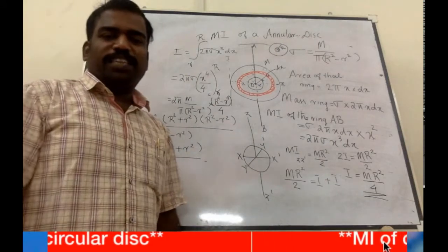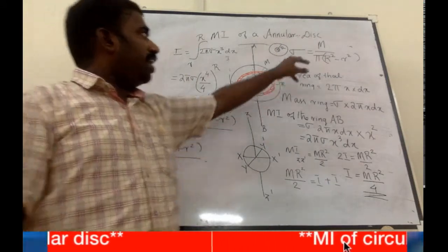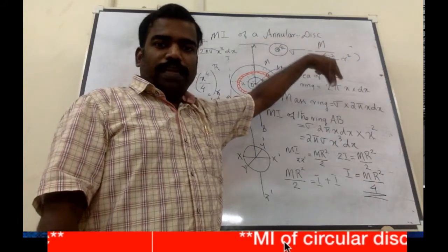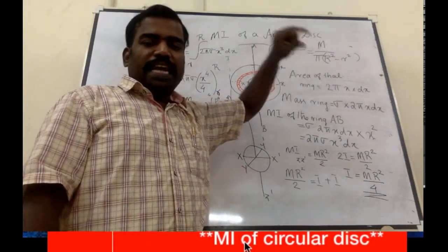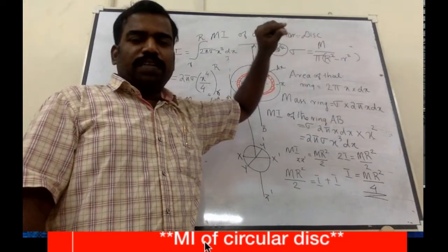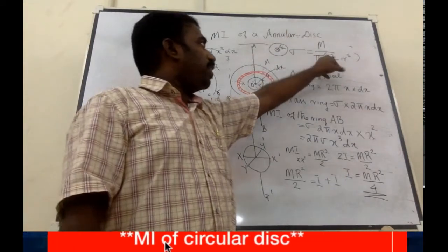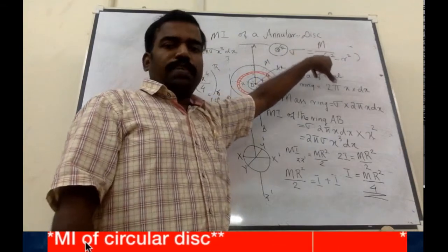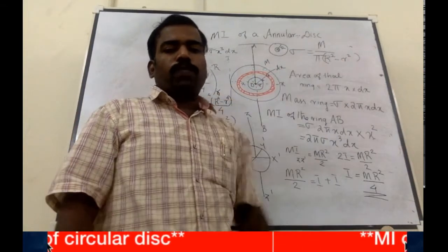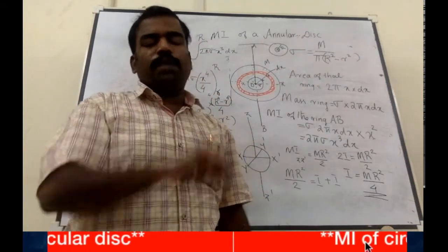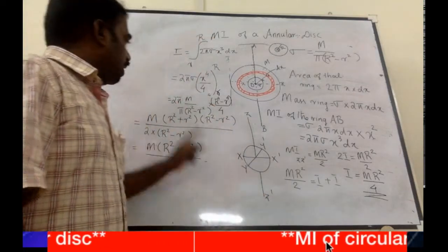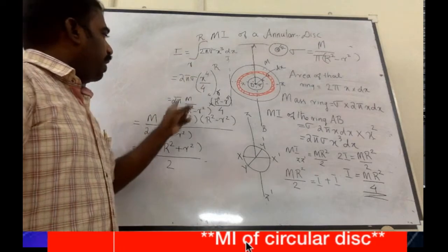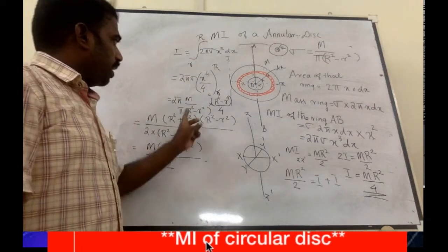Now, sigma means mass per unit area. The area of the annular ring is pi times (capital R squared minus small r squared). So sigma equals M divided by pi times (capital R squared minus small r squared). Substituting sigma with M divided by pi times (capital R squared minus small r squared).